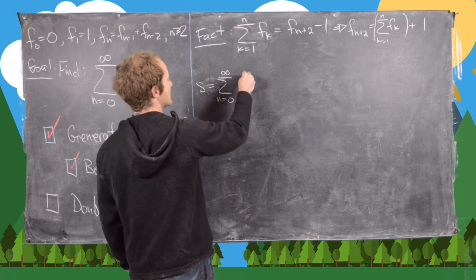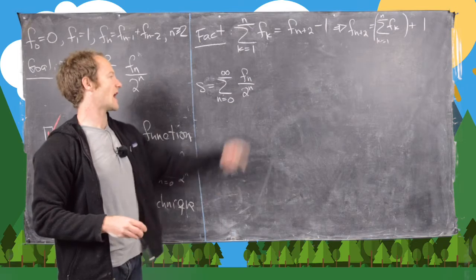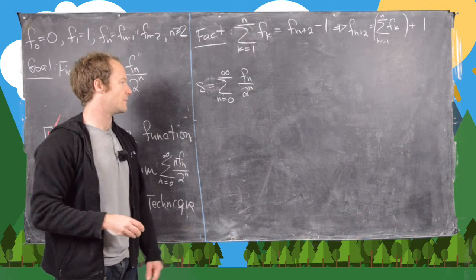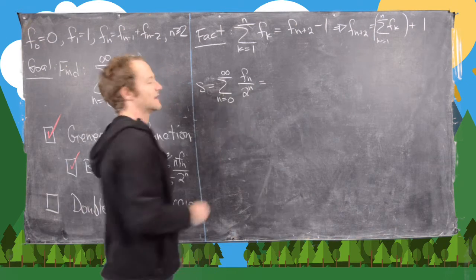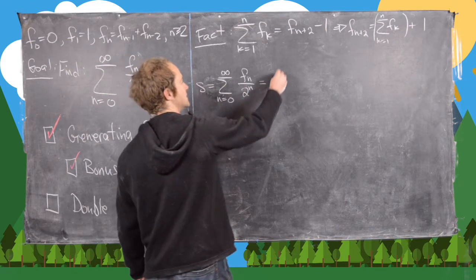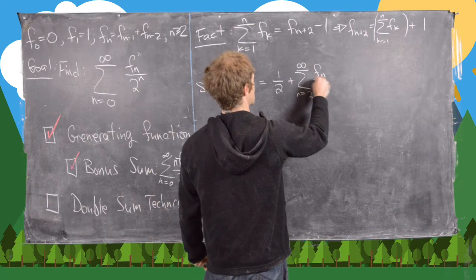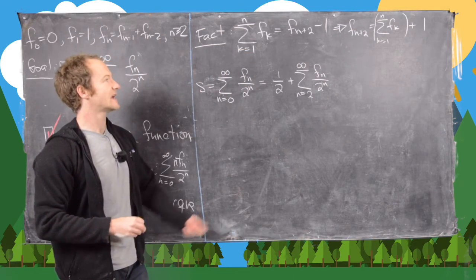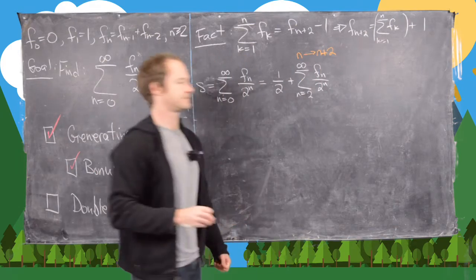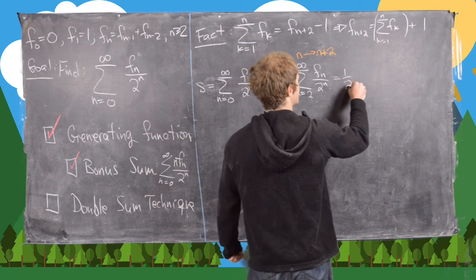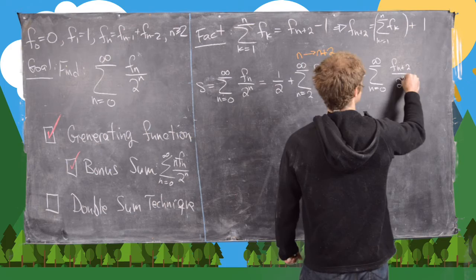Let S = sum from n=0 to infinity of f_n / 2^n. We pull out the n=0 term (which is 0) and the n=1 term (which is 1/2), leaving a sum from n=2 to infinity. Re-indexing by replacing n with n+2 gives 1/2 plus (1/4) times the sum of f_{n+2} / 2^n.